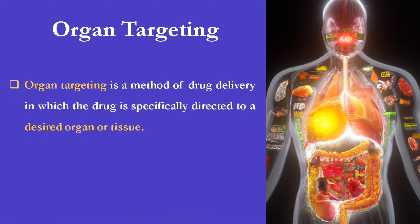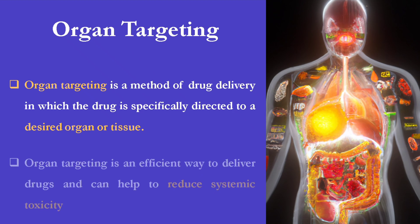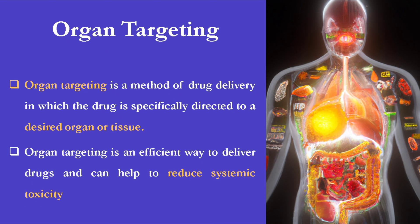Organ targeting is a method of drug delivery in which the drug is specifically directed to a desired organ or tissue. Organ targeting is an efficient way to deliver drugs and can help to reduce systemic toxicity.